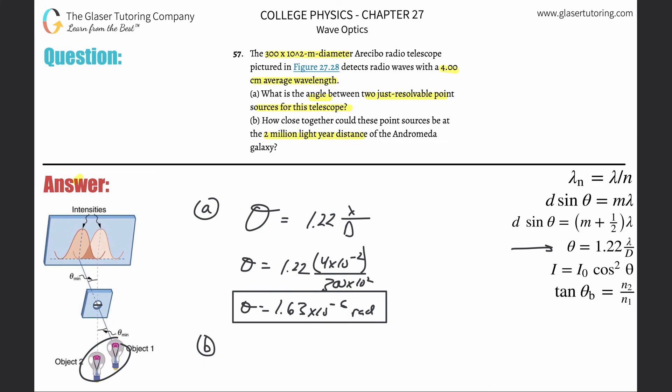What they're telling us according to the picture is that the distance between this Andromeda galaxy—we're trying to figure out how close together these two point sources need to be. In other words, we're trying to figure out this distance here. They're telling us that the galaxy, we'll assume that this leg is basically 2 million light-years, so 2 times 10 to the 6 light-years.